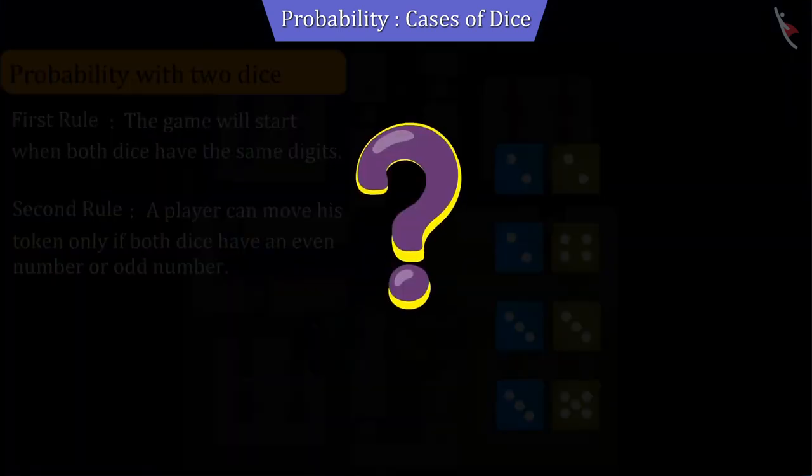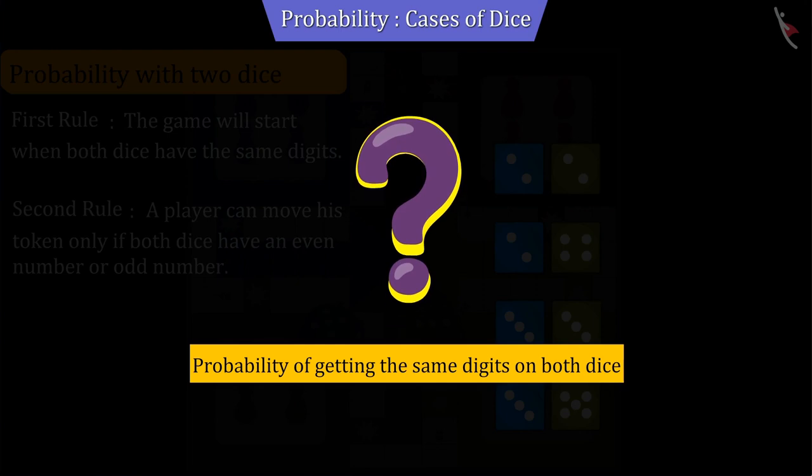Can you now tell what is the probability of getting the same number on rolling both dice? Let's discuss this.